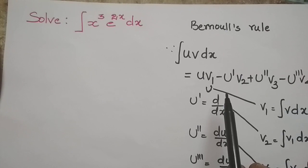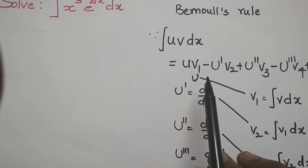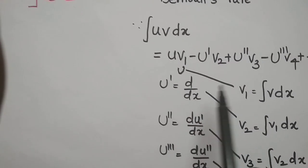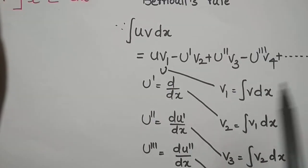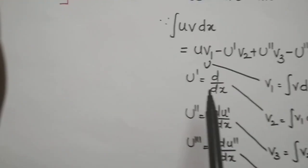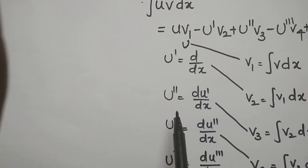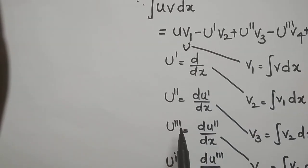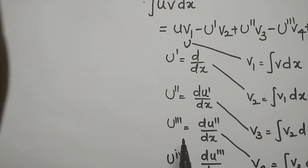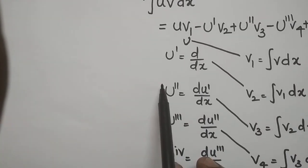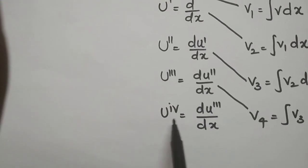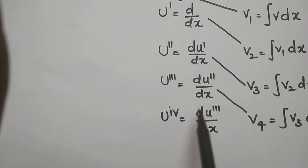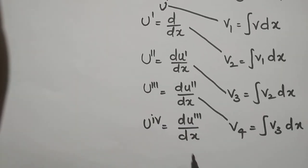The Bernoulli's rule states: integral of uv dx equals u·v1 minus u'·v2 plus u''·v3 minus u'''·v4, and so on, with alternating signs. Here, u' stands for d/dx of u, u'' for the differentiation of u', u''' for the differentiation of u'', and the fourth derivative is the derivative of u'''.